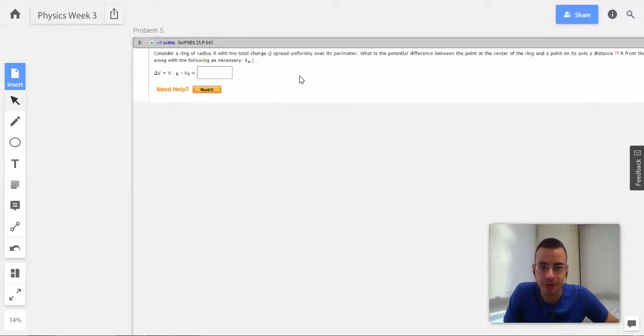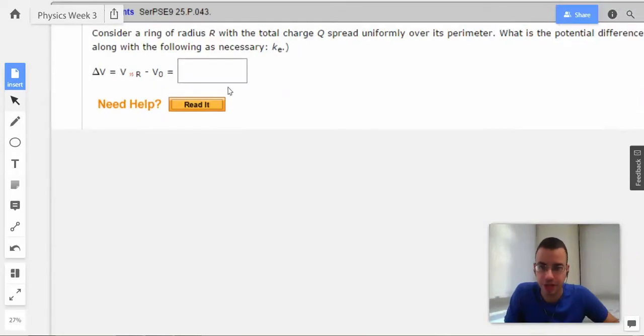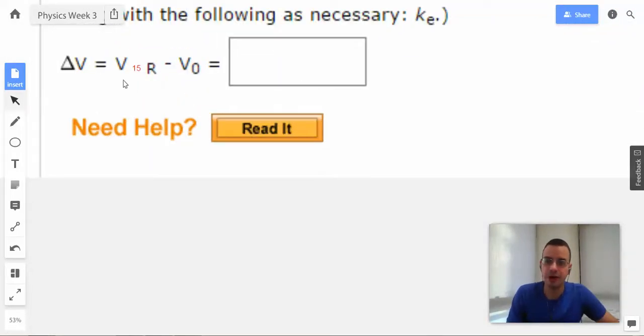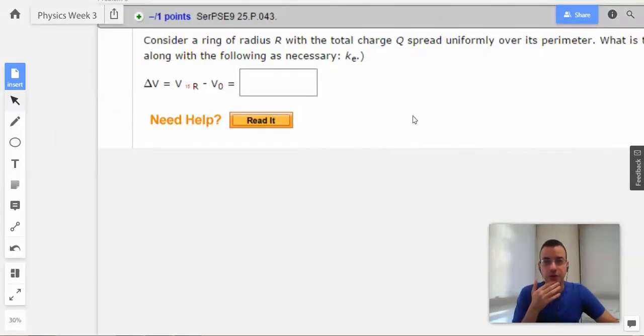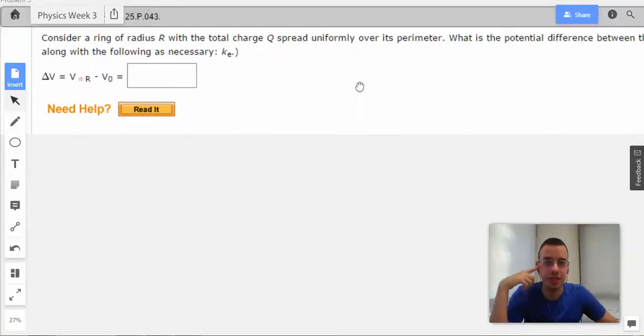Use any variable or symbol stated above, along with the following as necessary: K. And then they explain to us that they're talking about point at 15R minus V₀, where V₀ is in the center.